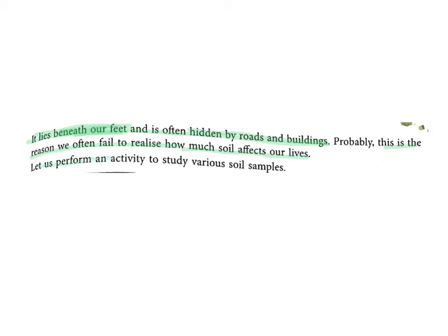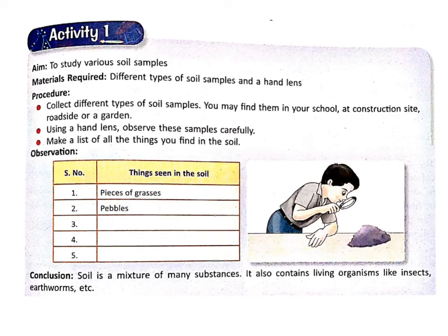Let us perform Activity 1 to study various soil samples. Aim: to study various soil samples. Materials required: different types of soil samples and a hand lens. Procedure: collect different types of soil samples. You may find them in your school, at a construction site, roadside, or a garden. Use a hand lens and observe these samples carefully.